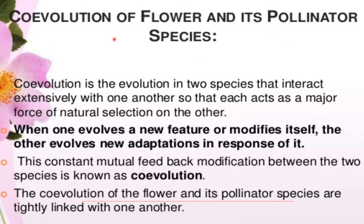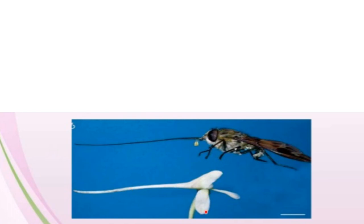Co-evolution of flower and its pollinator species: Co-evolution is the evolution in two species that interact extensively with one another, so that each acts as a major force of natural selection on the other. When one species evolves a new feature or modifies itself, the other evolves new adaptations in response. This constant mutual feedback between the two species is known as co-evolution, and the co-evolution of flowers and their pollinator species are tightly linked.